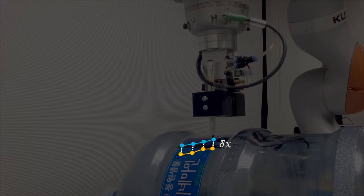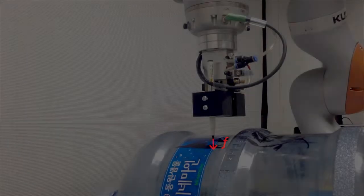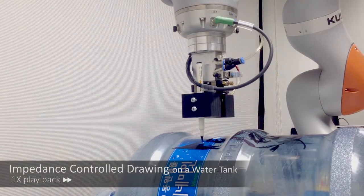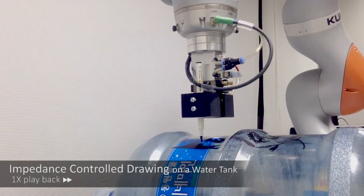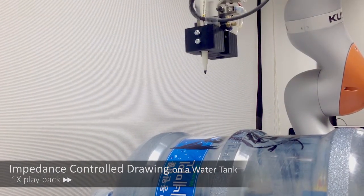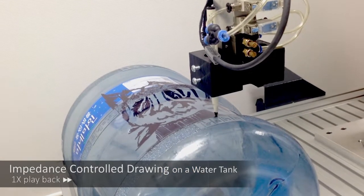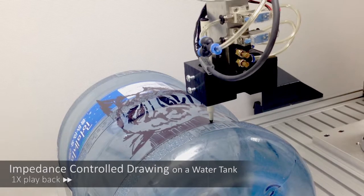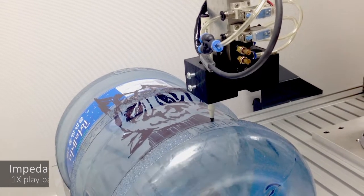The deviation between the target position and the physical position of the pen tip will result in a compliant force. Thanks to the impedance control, the robot will behave compliantly in the vertical direction of the end effector, so it successfully conducts the drawing task on a curved surface with a certain amount of force.